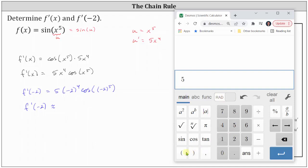we enter 5 times the fourth power of -2, right arrow, times cos of the fifth power of -2.